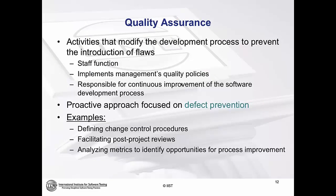QA versus QC. QA is typically a staff function. In some organizations, this might be a group of people that set standards and review how processes are going and how processes are being adhered to — they define the processes — whereas defect detection is more of your traditional quality control functions. Defect prevention is a proactive approach to defects. It involves a lot of metrics, a lot of reviews, and understanding how and when defects are being found, with the objective of identifying those defects as early in the process as possible.